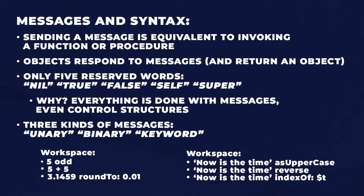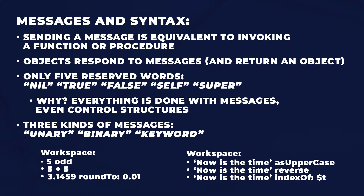Messages and syntax. Sending a message in Smalltalk is the equivalent of invoking a function or procedure in a traditional language. Objects respond to messages and return an object. There are only five reserved words in Smalltalk: nil, true, false, self, and super. How do you do things like control structures? Everything's done with messages. And that's part of the beauty — because a lot of the messages you get to name, so you can dictate how your code reads. That's very powerful.